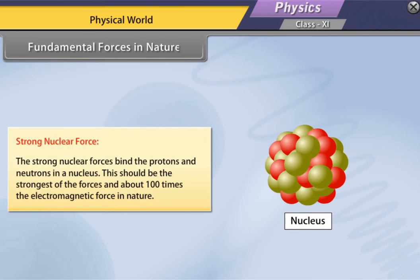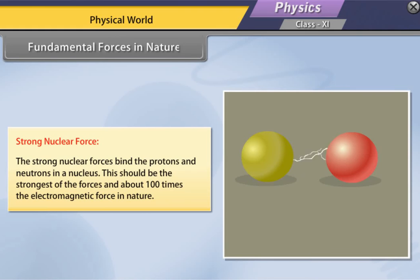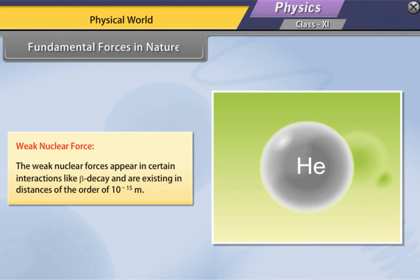The strong nuclear forces bind the protons and neutrons in a nucleus. This should be the strongest of the forces and about 100 times the electromagnetic force in nature. The weak nuclear forces appear in certain interactions like beta decay and are existing in distance of the order of 10 raised to the power minus 15 meter.